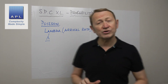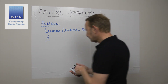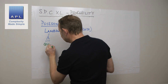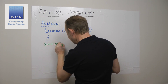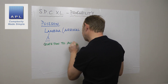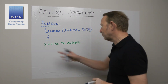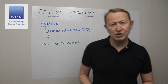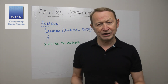Lambda is known as an arrival rate. You've got to come up with a question to answer — it's the same with all the probability distributions: what are my primary parameters and what's the question to answer? We're going to use a little case study from my Six Sigma notes.